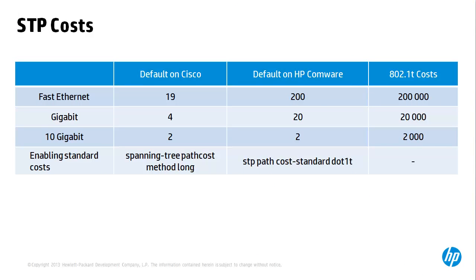Default path costs do vary. The default on Cisco is to use a cost of 19 for Fast Ethernet, 4 for Gigabit, and 2 for 10 Gigabit interfaces. This can be changed to use industry standard costs by using the command 'spanning-tree pathcost method long', which applies the 802.1t costs: 200,000 for Fast Ethernet, 20,000 for Gigabit, and 2,000 for 10 Gigabit. HP Comware switches by default use 200,000, 20,000, and 2,000 as the path costs.